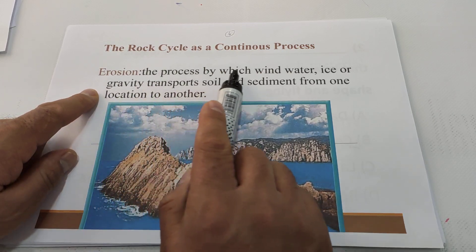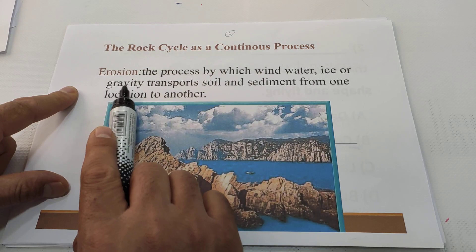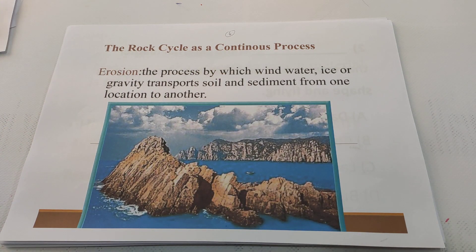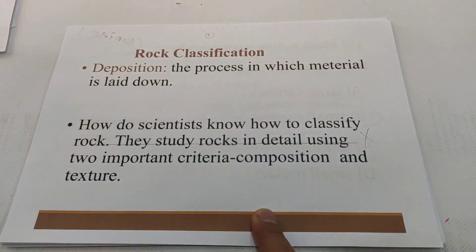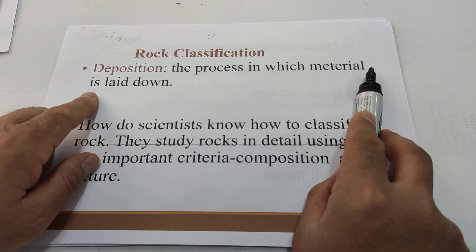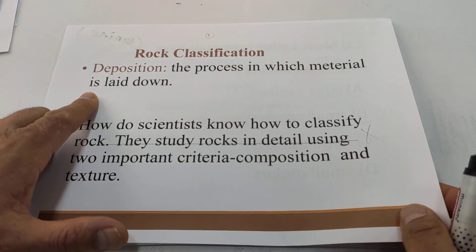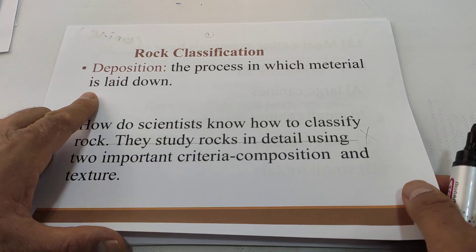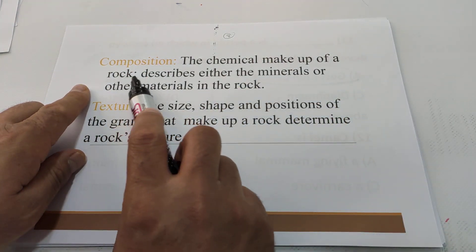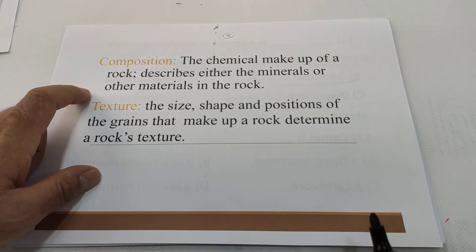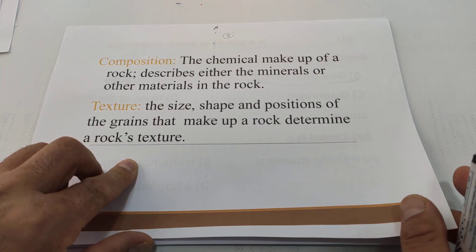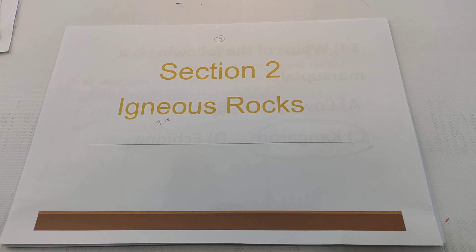Erosion is the process by which wind, water, ice, or gravity transport soil and sediment from one location to another — meaning soil moves from one place to another. Deposition is the opposite of erosion — the process in which material is laid down. Composition is the chemical makeup of a rock, described by the minerals or other materials in the rock. Texture is the size, shape, and positions of the grains that make up a rock.